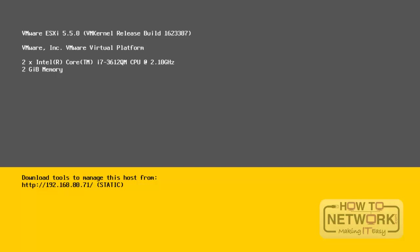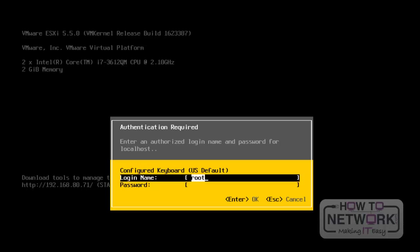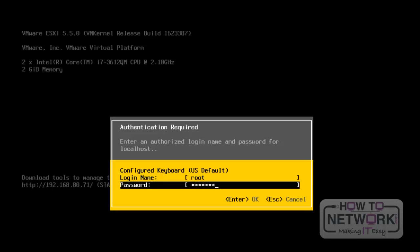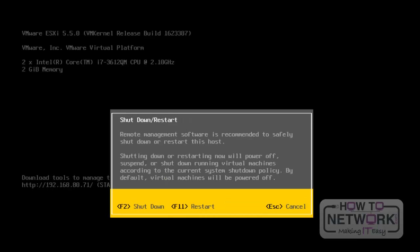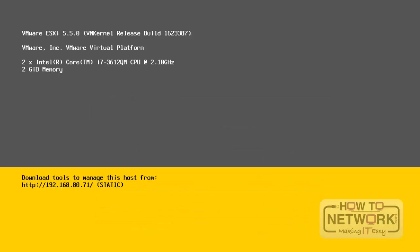In this way, we can customize all the system settings for this VMware ESXi server. To restart or shut down the ESXi server, press F12, enter the root password, and press Enter. From here, we can restart or shut down the server — press F2 for shutdown and F11 for restart. In this lesson, we learned how to configure an ESXi server for the first time. In the next lesson, we will discuss the installation of VMware vSphere client. Thank you.